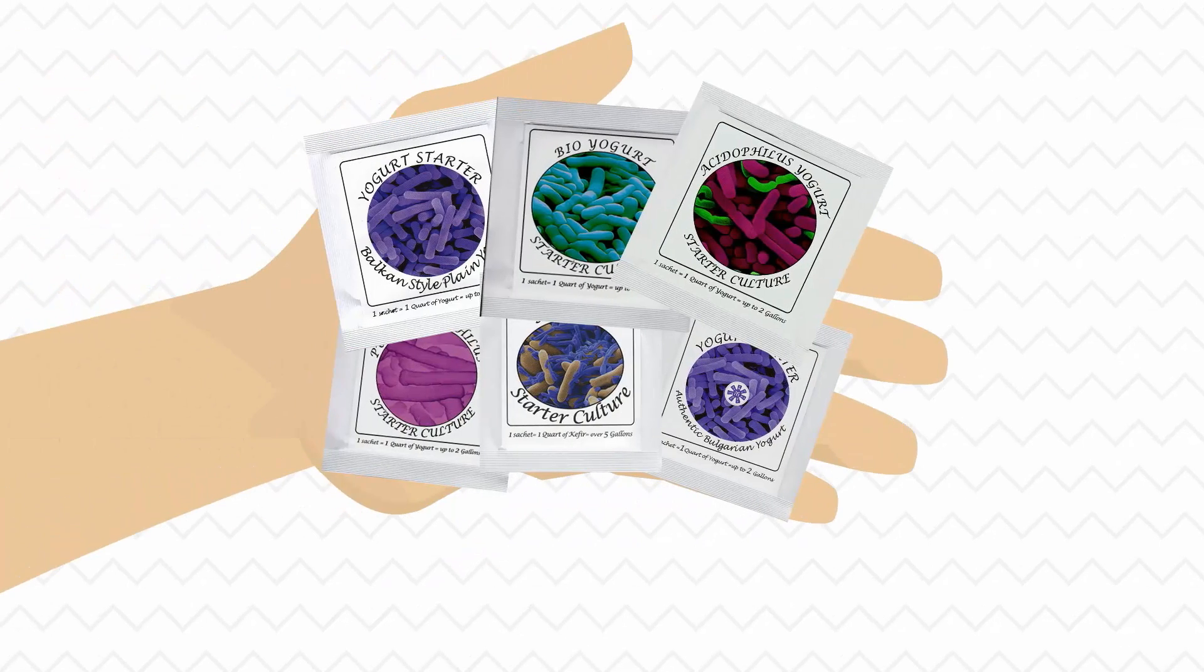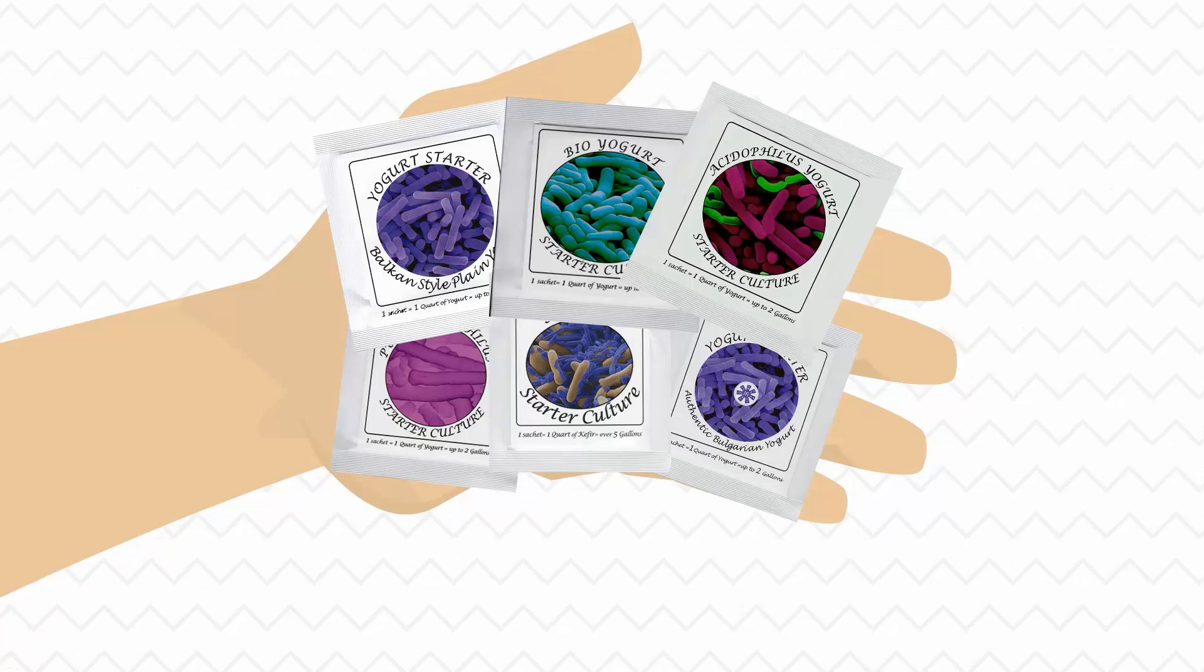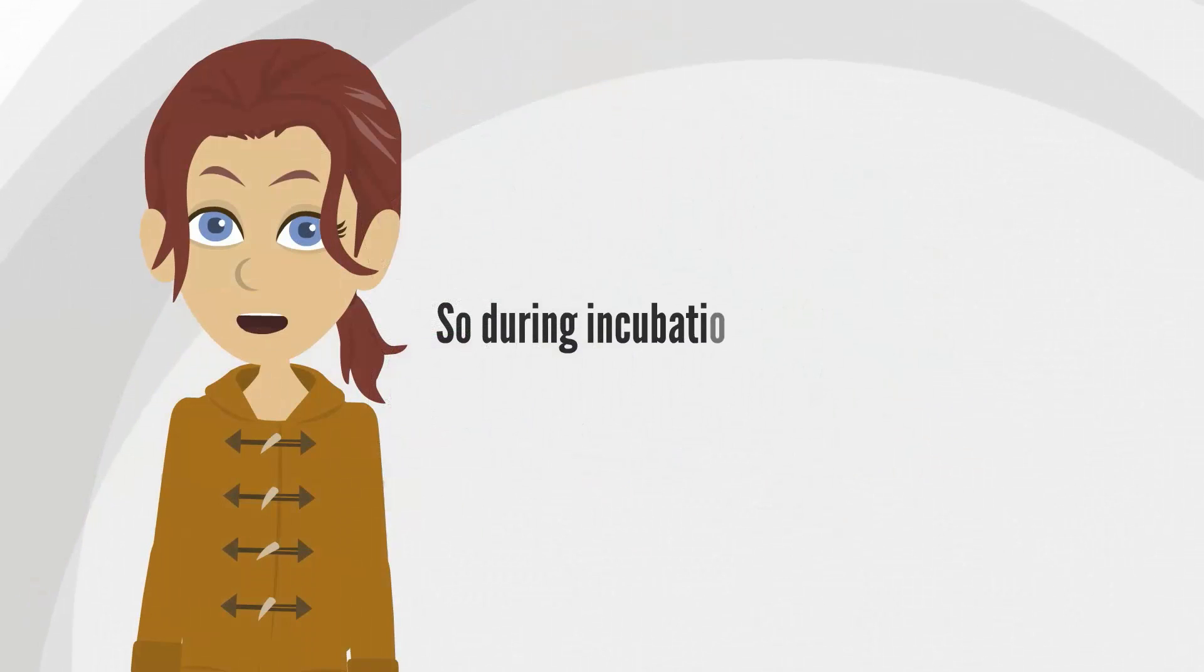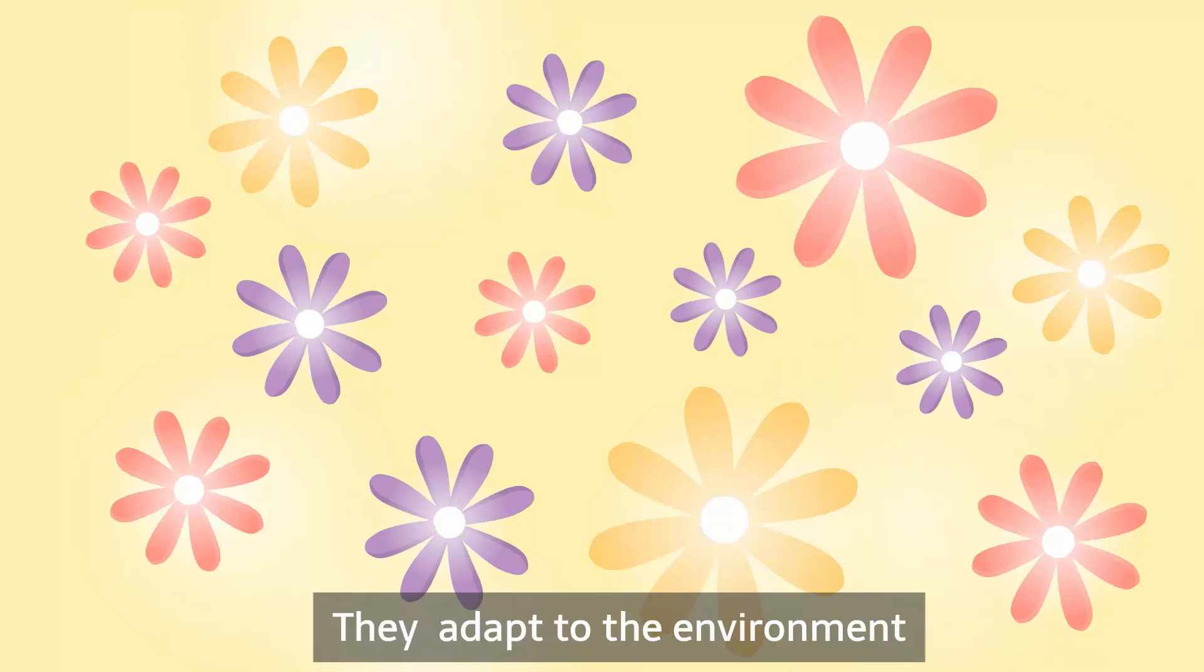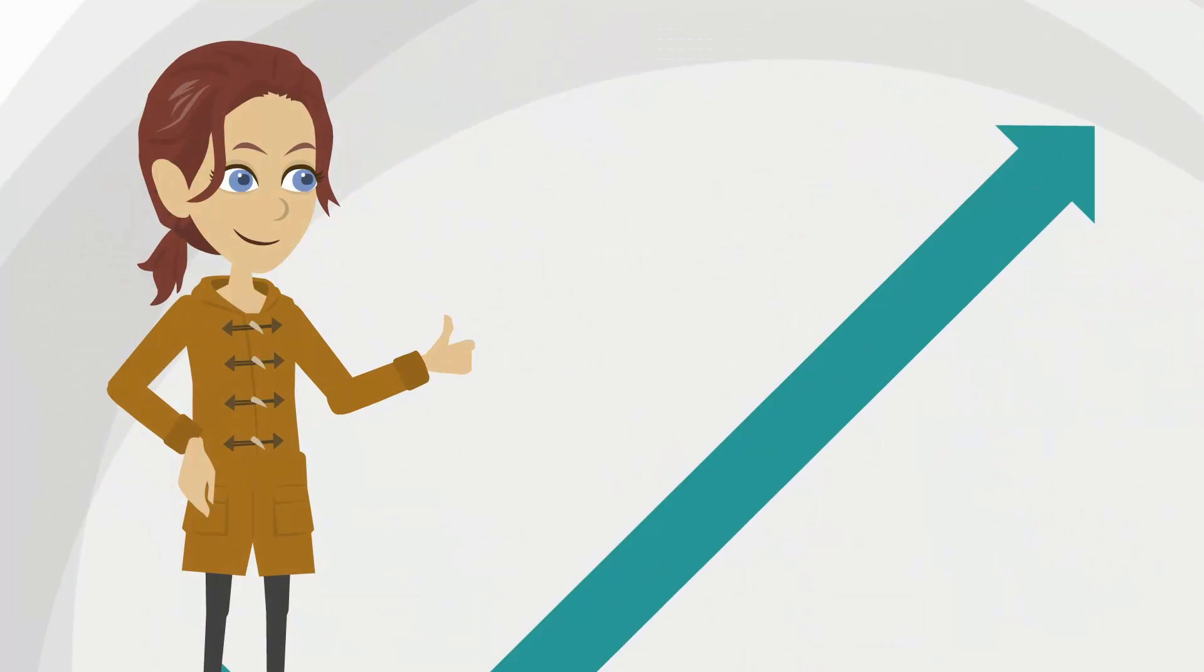The bacteria in the freeze-dried starter are hibernating, so during incubation at the temperature of 40 to 45 degrees Celsius, they will go through four stages. They adapt to the environment and produce proteins for the next stage, which is rapid growth.